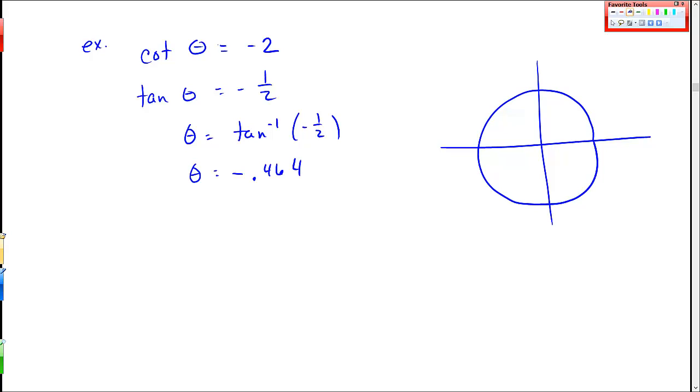So I have something like this, and the angle that it's giving me is this one right here. This angle is negative 0.464, but that's also not in 0 to 2π, right?